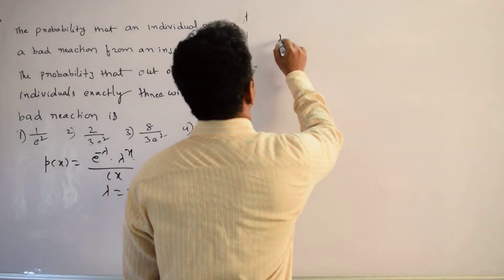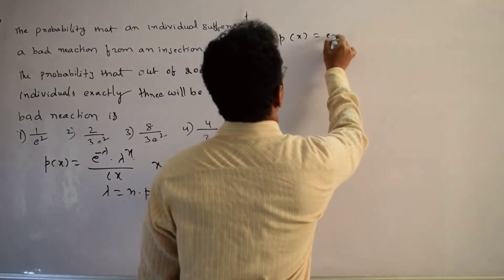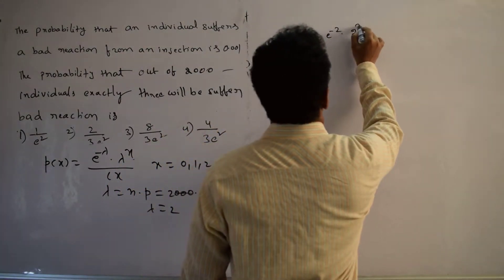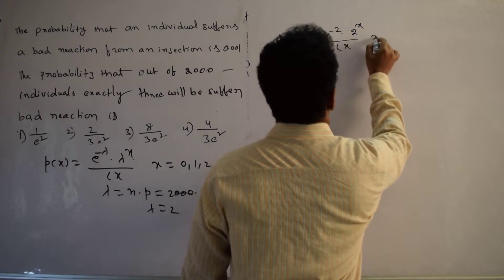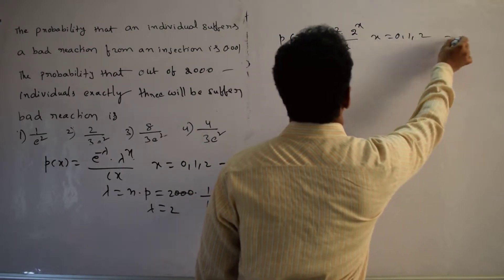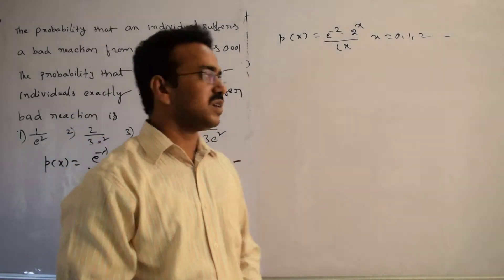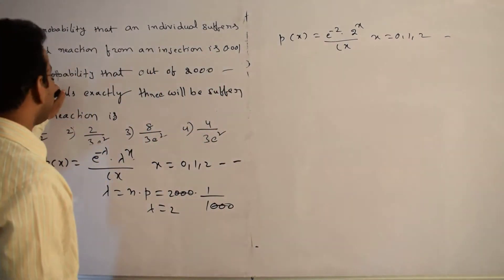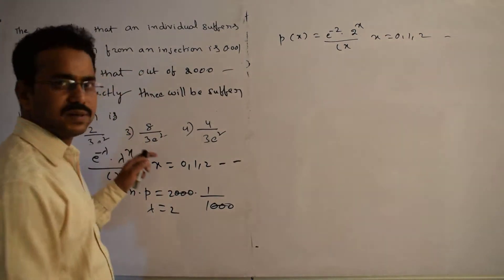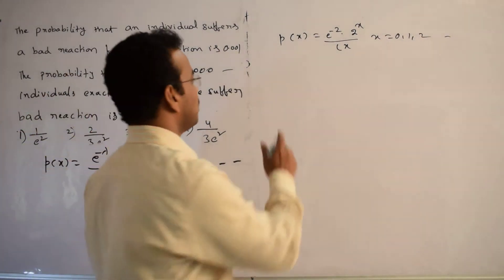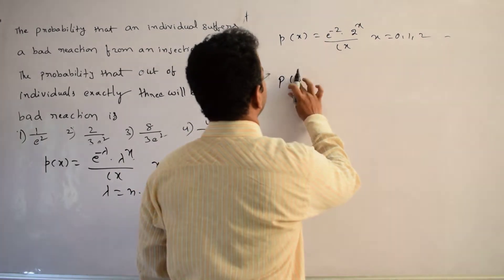Therefore, the Poisson distribution becomes p(x) equals e power minus 2 times 2 power x by factorial x, where x equals 0, 1, and so on. Now, what is the required probability? The probability that out of 2000 individuals, exactly 3 will be suffering. That means probability of 3, X equals 3.